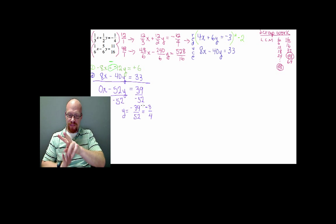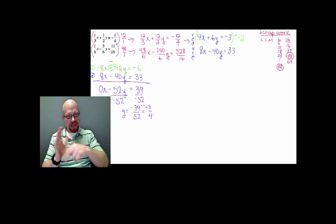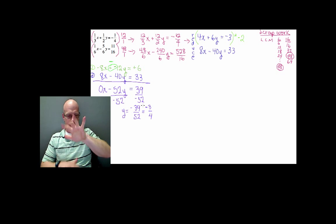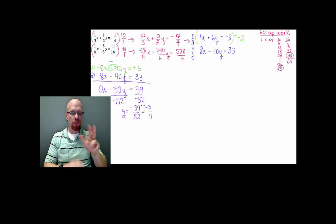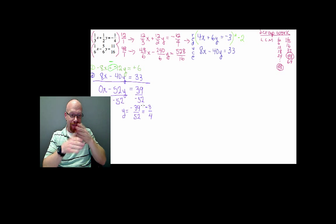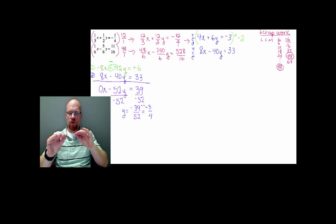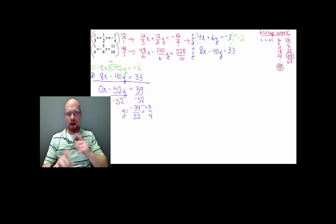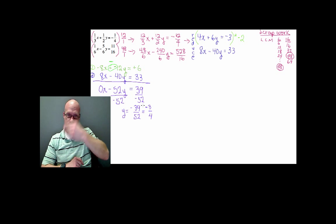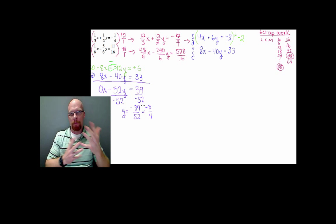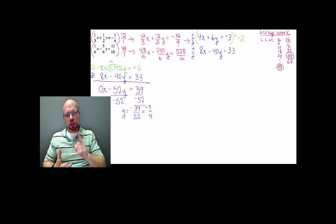Now we solve for our y variable. We divide by negative 52 because we want the y variable to have a coefficient of 1. 39 divided by 52, if we simplify that, becomes negative three-fourths.